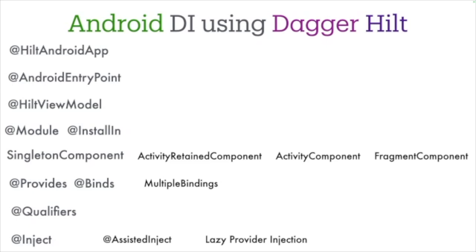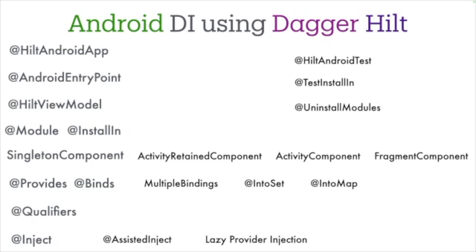One area we haven't tackled is Hilt for testing. I intentionally did not cover that because we have not done any unit testing on this channel yet. Once we venture into testing, you will see how Hilt can simplify test setup using annotations like @HiltAndroidTest, @TestInstallIn, and @UninstallModules. @HiltAndroidTest is used for instrumented tests, @TestInstallIn is used to replace modules at test time, and @UninstallModules is used when you want to override your real dependencies with mocks or fakes. Don't worry — when we get there, we will circle back to these Hilt testing concepts in detail.